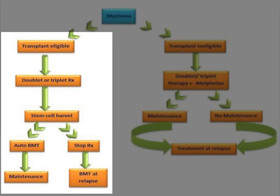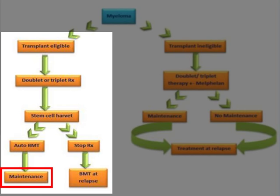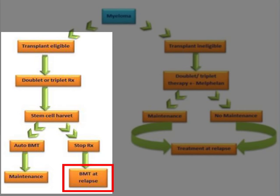After stem cell harvest, most patients would have more cycles of chemotherapy to increase the response and bring down the myeloma load. Most patients who have stem cells collected would proceed to autologous bone marrow transplantation, which involves administration of high-dose melphalan chemotherapy and stem cell rescue. Following this, a patient may opt to have maintenance treatment with one of the novel agents. Some patients may opt to stop treatment after completion of chemotherapy short of stem cell transplantation. Stem cell transplantation is also an option at time of relapse.